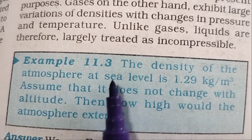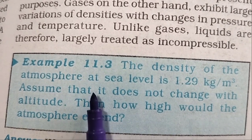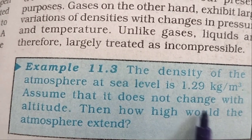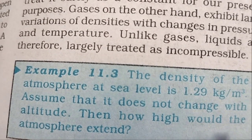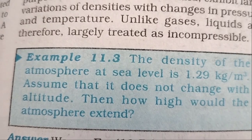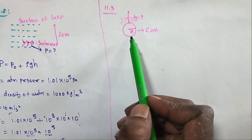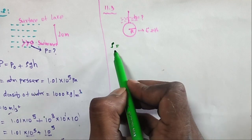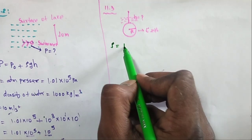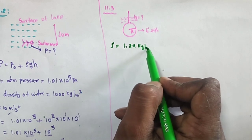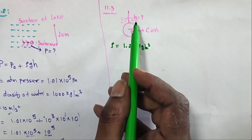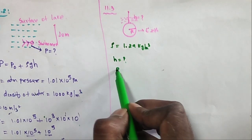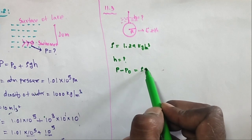Textbook problem 11.3: The density of the atmosphere at sea level is 1.29 kg/m³. Assuming it does not change with altitude, how high would the atmosphere extend? Here I take the earth with atmosphere density at sea level = 1.29 kg/m³. We need to calculate H using P - P₀ = ρgH (gauge pressure).